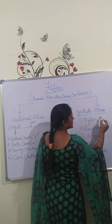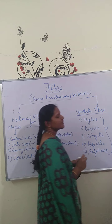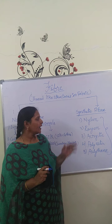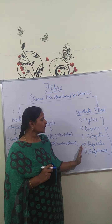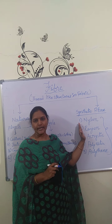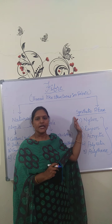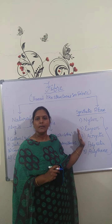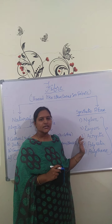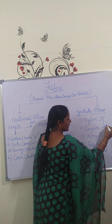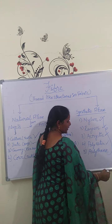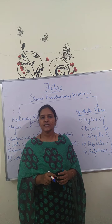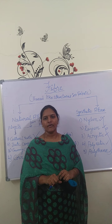The last category is synthetic fiber. Synthetic fibers are man-made fibers, and we are using them a lot nowadays. This fiber is made by humans using different chemical compositions. That's why they are called synthetic fibers. For example: nylon, rayon, acrylic, polyester, and polythene — these five are called synthetic fibers.